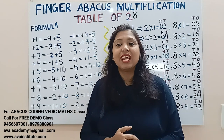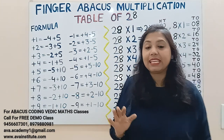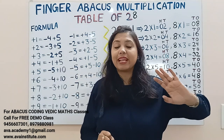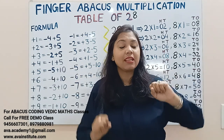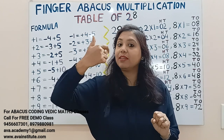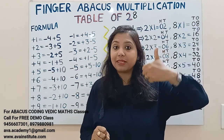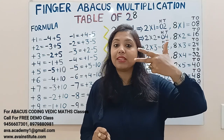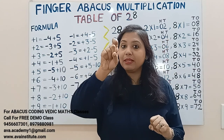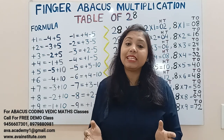Now let's quickly start the class. In Finger Abacus, the right hand represents the ones place and the left hand represents the tens place. In the right hand, the value of the thumb is 5 and the value of each finger is 1. In the left hand, the value of the thumb is 50 and the value of each finger is 10. In the right hand only, we also represent hundreds.